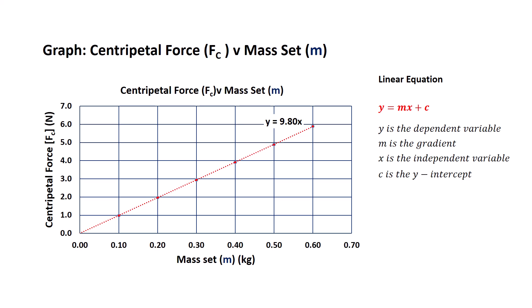Let's now examine this linear equation in the context of this data set. The general rule for a linear equation is y equals mx plus c, where y is the dependent variable, m is the gradient, x is the independent variable, and c is the y-intercept. First of all, in this context, let's look at what the variable y, the dependent variable, represents. In this context, it's the centripetal force Fc that is the dependent variable. M is the gradient, and Excel has provided a gradient of 9.80, and we substitute that into our linear equation.